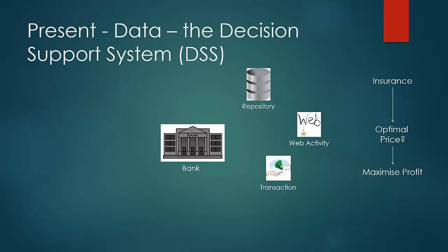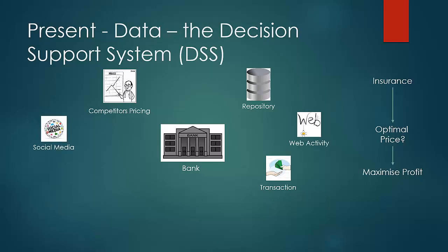Along with this internal data, there are external sources also available that would be important for the analysis. These include the all-important competitor pricing, social media updates generated by market research firms analyzing trends, and lastly, third-party statistics — such as recent trends in medical problems and expenditure, or how many accidents are happening per thousand people in a locality.